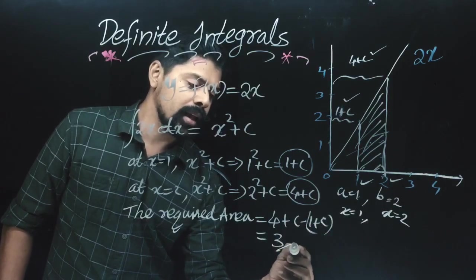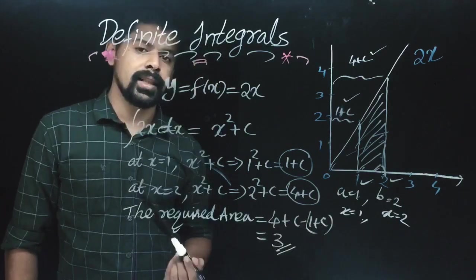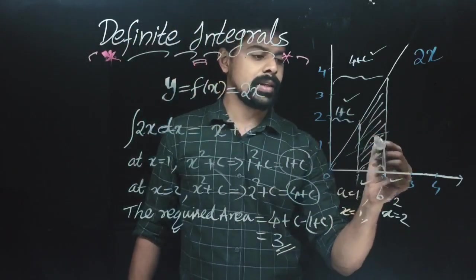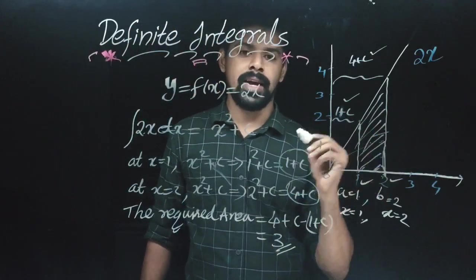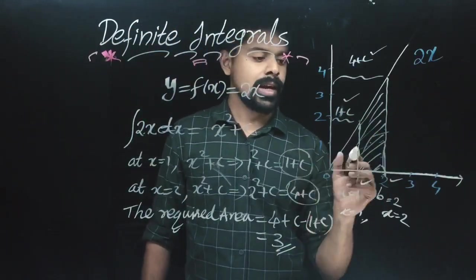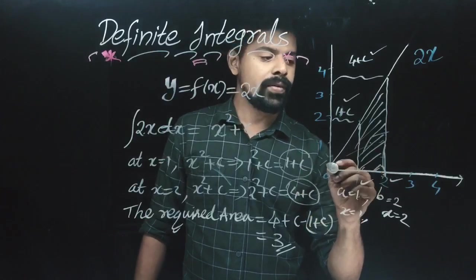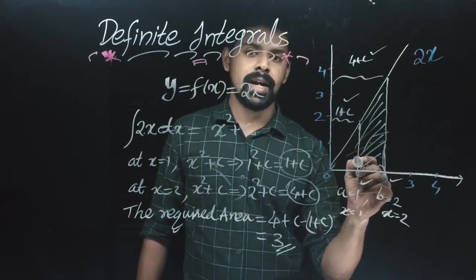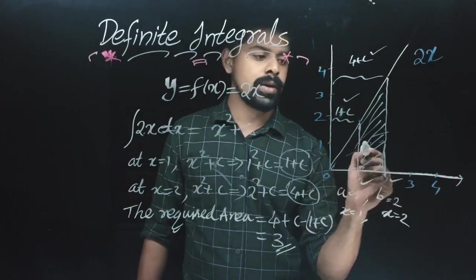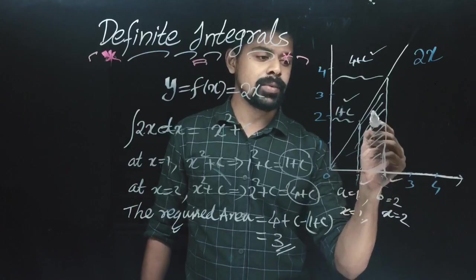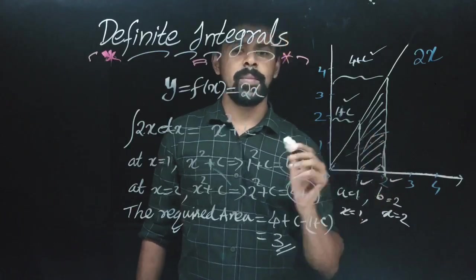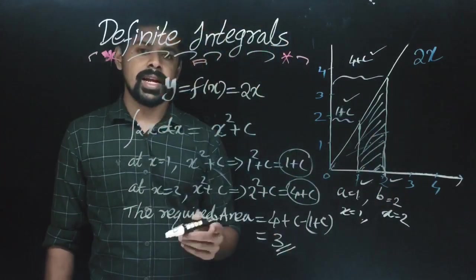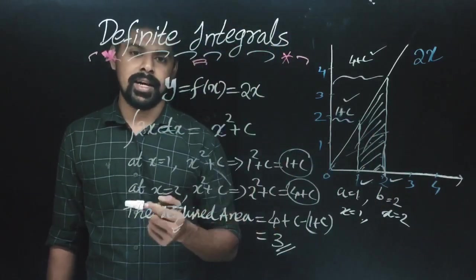The result is 3. So the area is 3. This is our definite integral result.